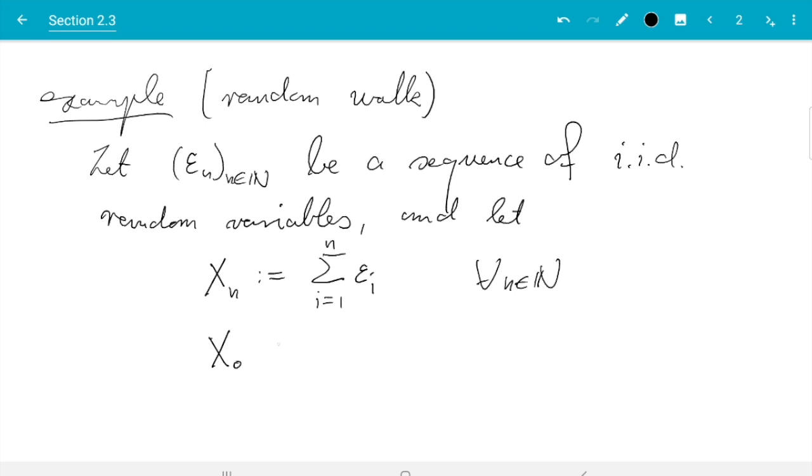Let (εn)n∈N be a sequence of independent and identically distributed random variables. The Markov chain is defined as Xn = Σi=1 to n εi for all n in N, and I want to define X0 separately, that is 0.